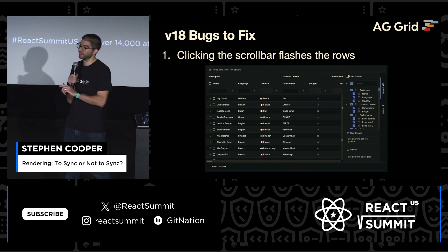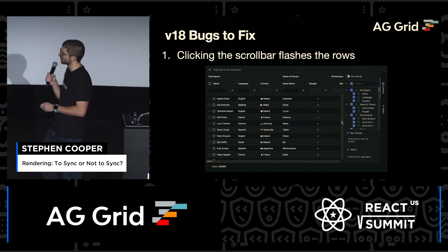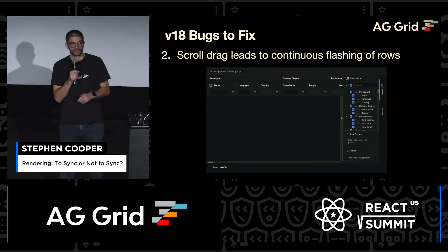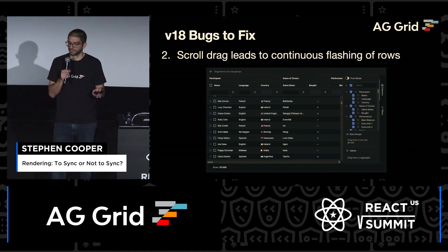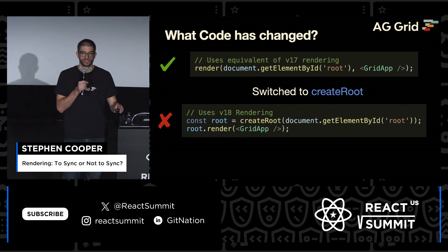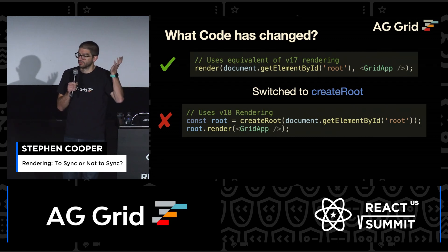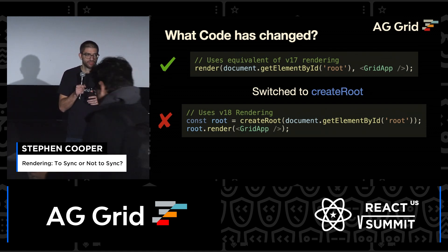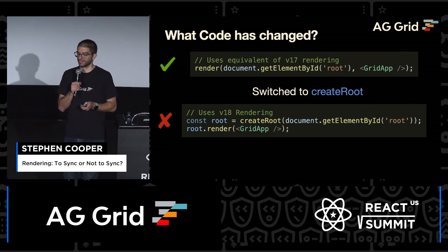The first bug we're going to look at is clicking the scroll bar causing this flash. And then the second issue is when you're scrolling, the rows are completely wiping out. This is the only line of code which is different between those two examples. We've upgraded to version 18 and switched to createRoot. When you're using render, it's basically the equivalent of rendering from version 17. But now with version 18, switch to createRoot and you start enabling all these concurrent rendering features and automatic batching.